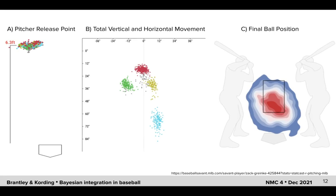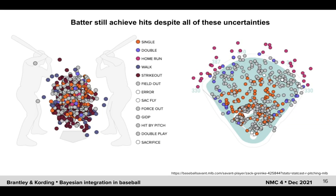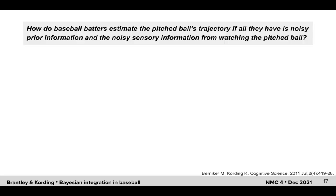However, despite all of these uncertainties, batters are still able to achieve hits. So the question remains: how do baseball batters estimate the pitched ball's trajectory if all they have is noisy prior information and noisy sensory information from watching the pitched ball? More generally, how do humans make accurate and repeatable movements in the presence of multiple sources of uncertainty?